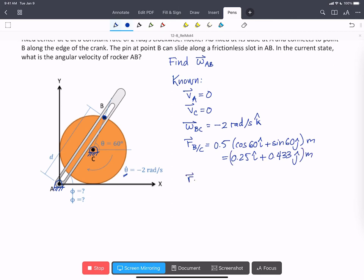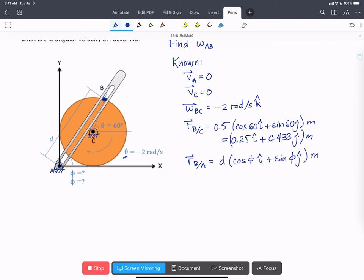We also know that R of B with respect to A is going to be the distance D times cos phi in the i-hat plus sine phi in the j-hat meters. And finally, we know RC with respect to A is going to be just the radius in both directions, so that's 0.5 i-hat plus 0.5 j-hat meters.